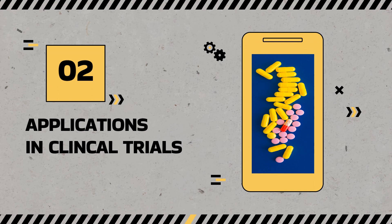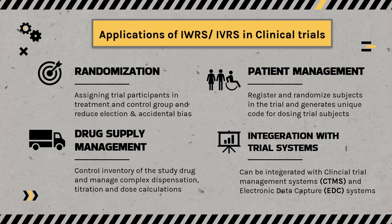Now let us look at what are the applications of these systems in clinical trials. There are four primary areas that are critical for these systems. The first is randomization. Randomization essentially means a method to assign trial participants in a clinical trial to either a control group or a treatment group, and it reduces selection and accidental bias.